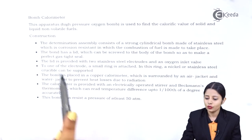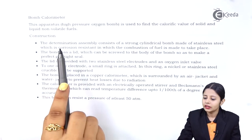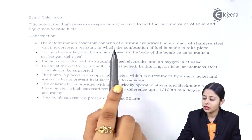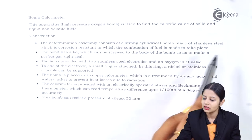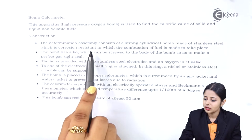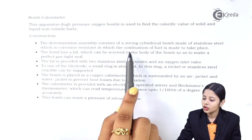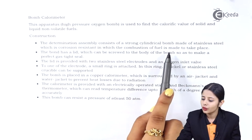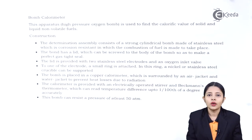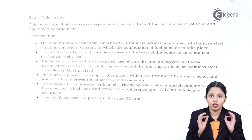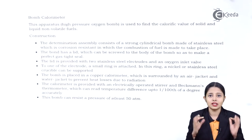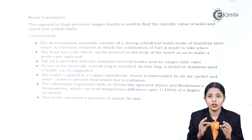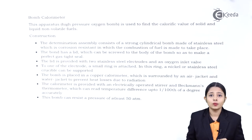Let us see the construction. The determination assembly consists of a strong cylindrical bomb made up of stainless steel, which is corrosion resistant, in which the combustion of fuels takes place. It is very important to understand that it is made up of stainless steel because stainless steel is an alloy that will not get corroded — it has to be corrosion resistant.